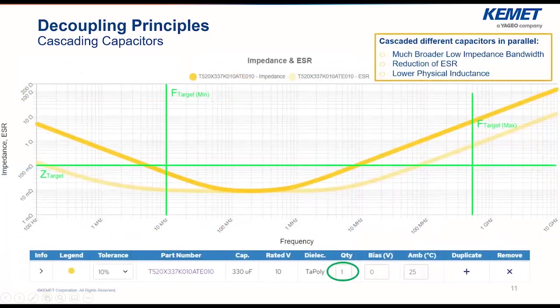Let's look at a more strategic example. Our target impedance is 100 milliohms, with a lower frequency bound of 10 kilohertz and an upper bound of about 500 megahertz. We start with a tantalum polymer capacitor — this one is 330 microfarads — which takes care of the lower bound easily. Our target impedance is the green line and the impedance of our decoupling network is the heavy yellow line. The lower bound is fine, but the upper range is still well over our target.